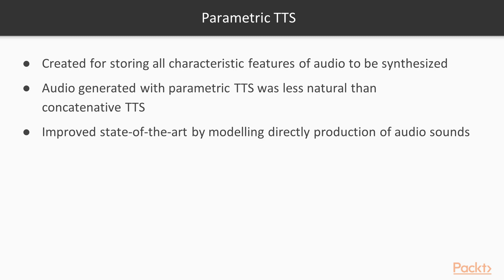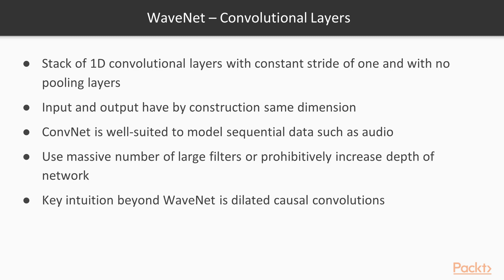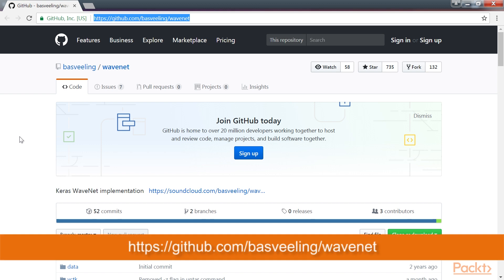WaveNet improved the state-of-the-art by modeling directly the production of audio sounds instead of using intermediate signal processing algorithms used in the past. In principle, WaveNet can be seen as a stack of 1D convolutional layers with a constant stride of 1 and with no pooling layers. The input and the output have by construction the same dimension, so ConvNet is well-suited to model sequential data such as audio. In order to reach a large receptive field, it is necessary to either use a massive number of large filters or prohibitively increase the depth of the network. For this reason, pure ConvNets are not effective for audio synthesis. The key intuition behind WaveNet is dilated causal convolutions. One Keras implementation developed by Basfeeling is available at this website.